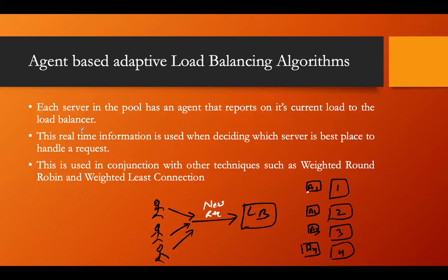This real-time information is used when deciding which server is best placed to handle a request. It is used in conjunction with other techniques such as weighted round robin or weighted least connection, so the agent-based load balancer is combined with those algorithms we learned earlier.